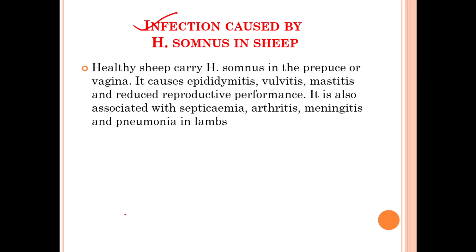Healthy sheep carry Haemophilus somnus in their prepuce and vagina. However, the bacteria can cause epidermitis, vulvitis, mastitis, and reduced reproductive performance. They can also be associated with systemic infection or septicemia, inflammation of joints (arthritis), meningitis, and pneumonia in the case of lambs.